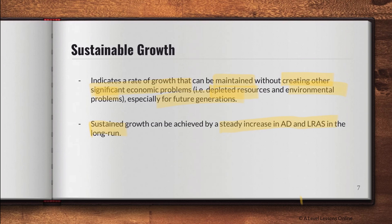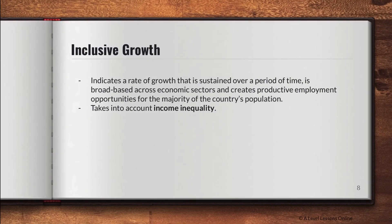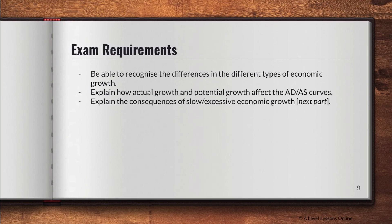Sustainable growth can be achieved by a steady increase in both AD and long-run AS over time. Sustained growth means economic growth lasting over a long time regardless of environmental impact; sustainable growth is long-run growth coupled with meeting environmental and social needs simultaneously. Inclusive growth is a rate of growth sustained over time, broad-based across economic sectors, creating productive employment for the majority of the population — ensuring everyone has a job and basic living standards met, accounting for income inequality across all classes.